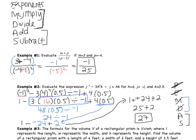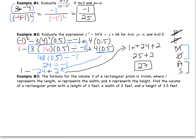That was the first objective — using the order of operations. Now moving to Example 3, which covers using a formula. The formula for the volume of a rectangular prism is V equals L times W times H, where L is length, W is width, and H is height. Find the volume with length 4 feet, width 2 feet, and height 3.5 feet. Start by rewriting the formula and substituting: V equals 4 times 2 times 3.5.